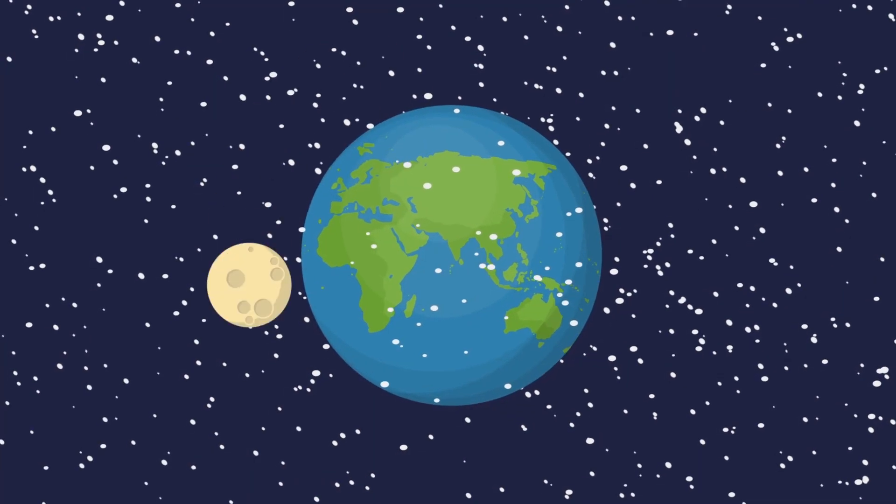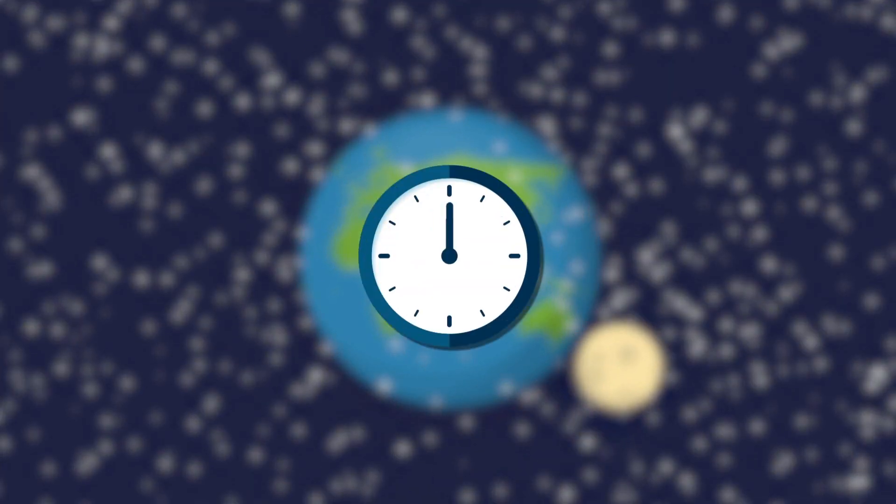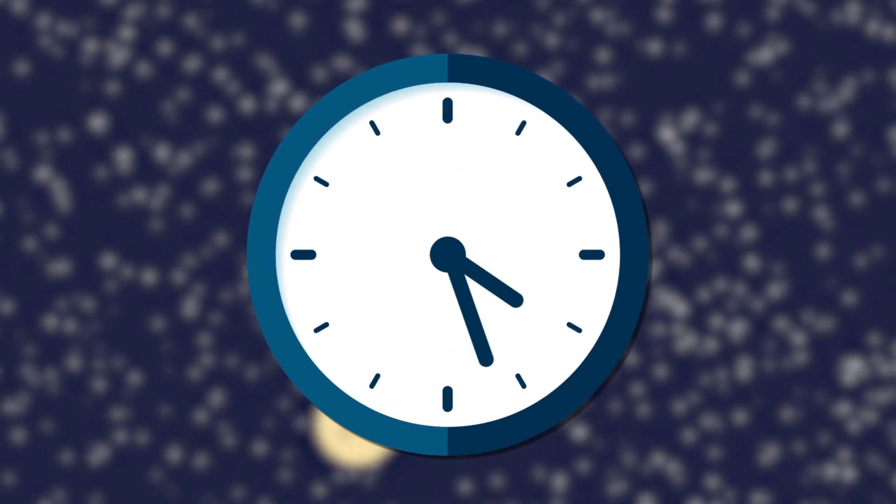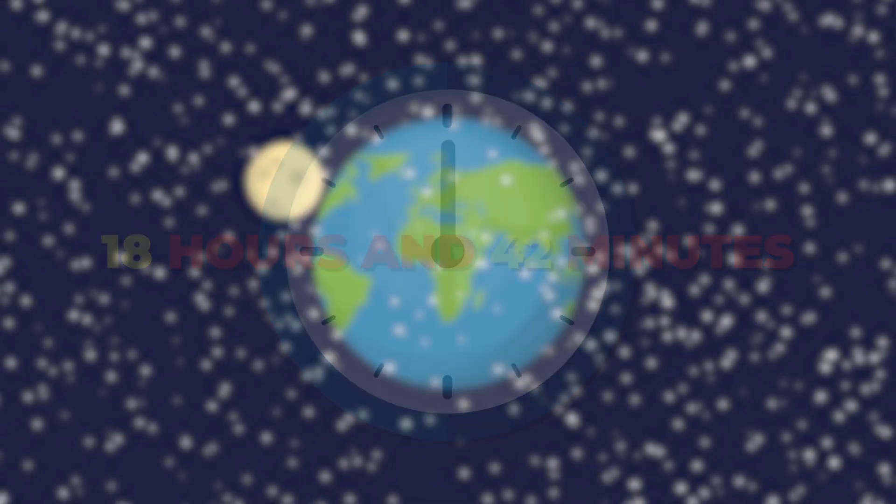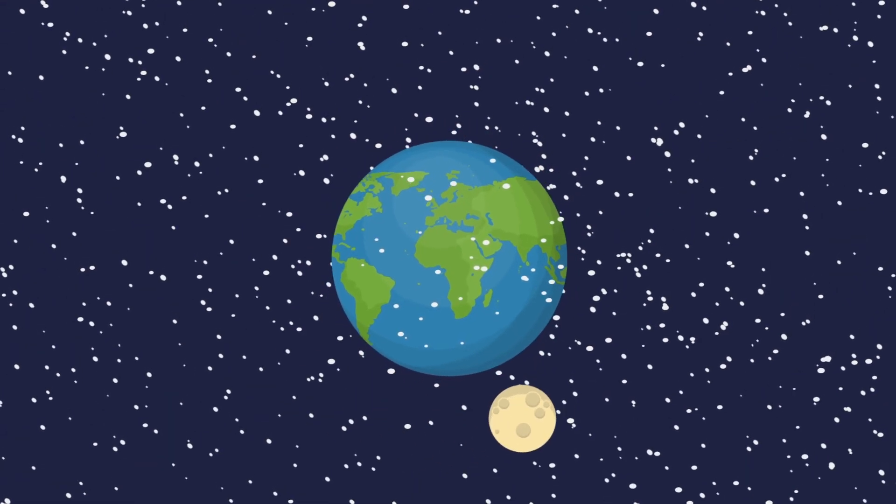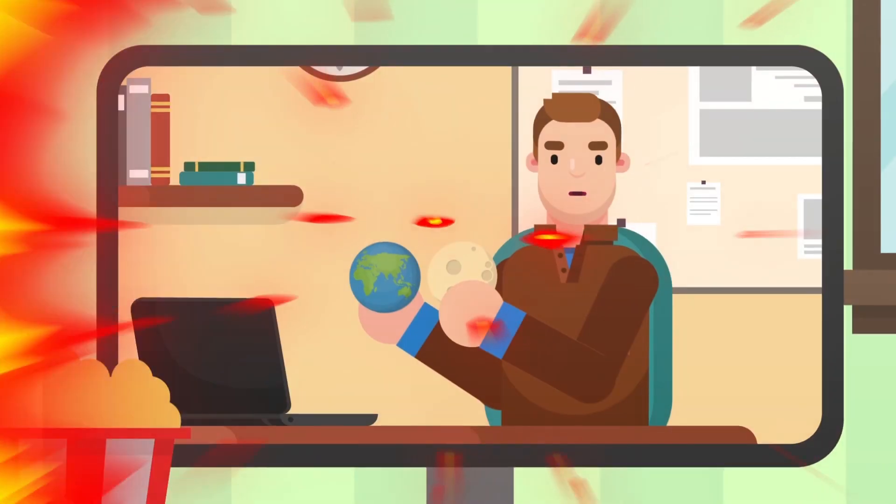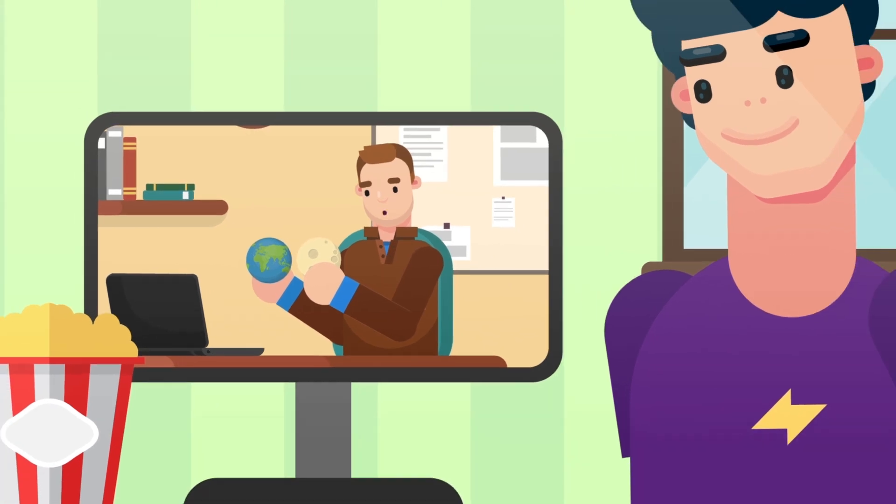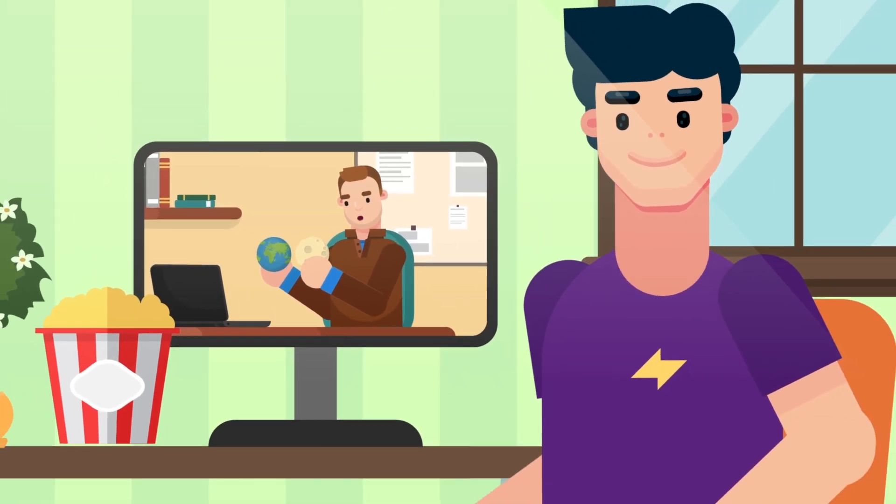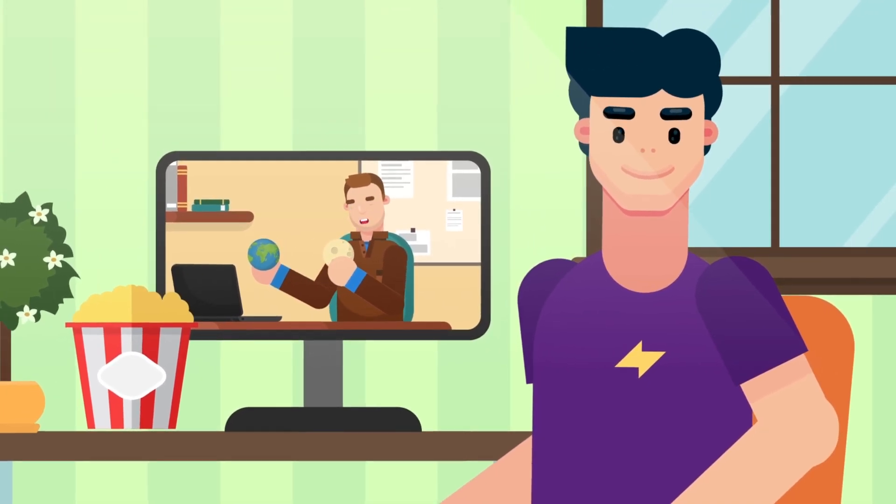This means that 1.4 billion years ago, a day lasted only 18 hours and 42 minutes, and the Moon was about 27,000 miles closer to Earth. In other words, the Earth's rotation is slowing down and the Moon's orbit is expanding. And if nothing else intervenes, the Earth and Moon will eventually become tidally locked, making the length of a day and the length of a month the same. Wouldn't that mess up your schedule?